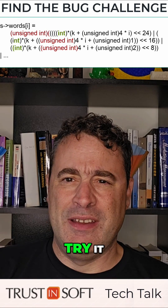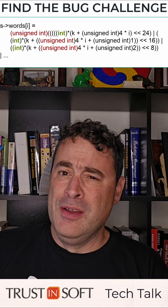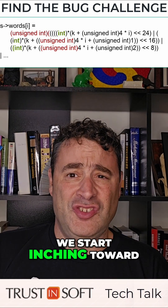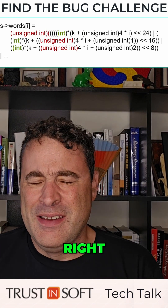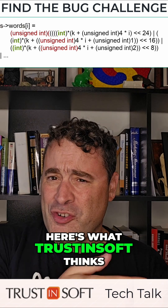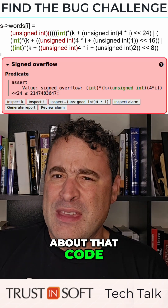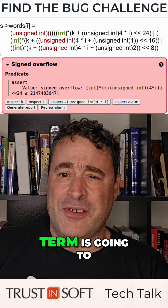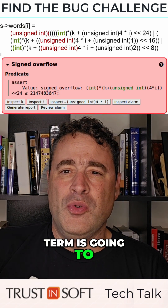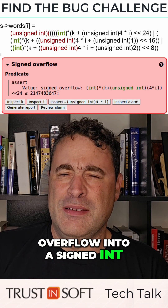How about now? Try it. We start inching toward the goal, right? Here's what Trust and Self thinks about that code: it says that this term is going to overflow into a signed int.